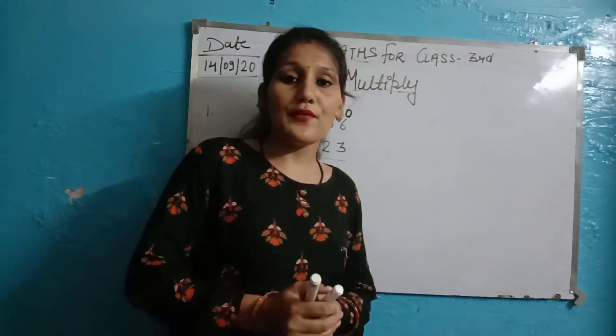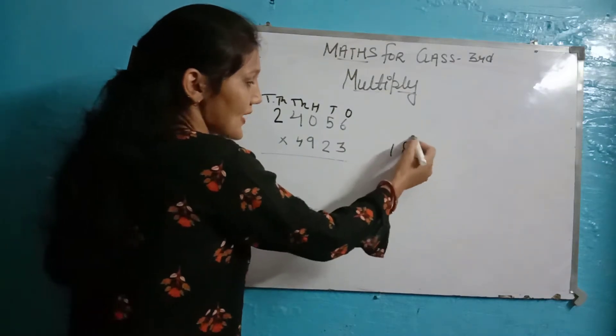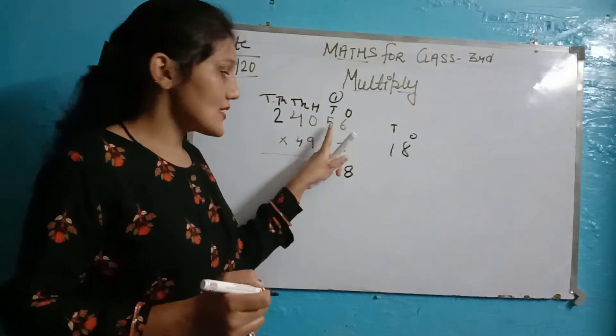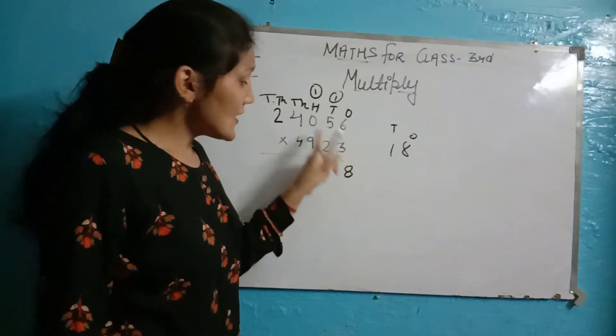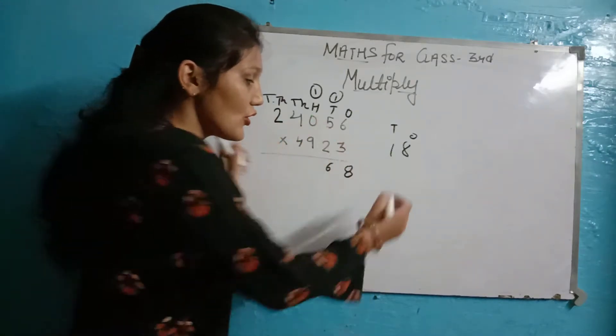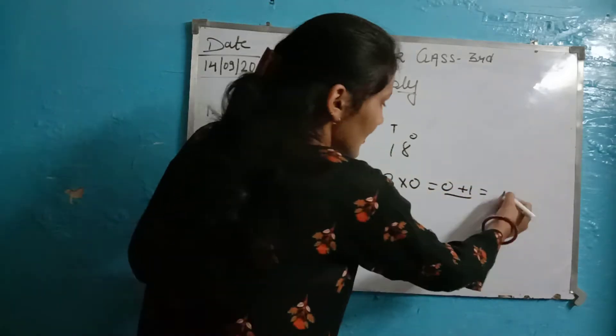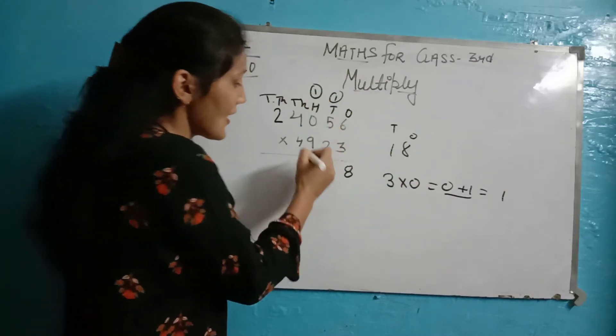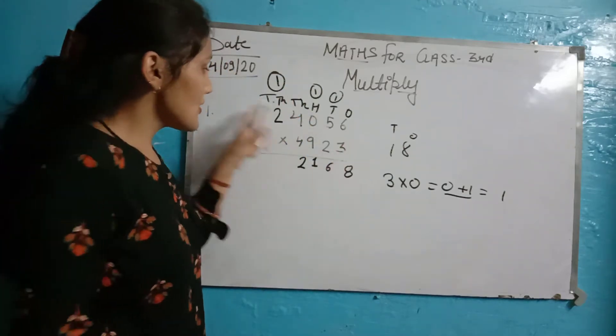So 3 times 6 equals 18. All the children will know. We will write 8 in the ones place and carry 1. Now this number is in tens place. 3 times 5 equals 15, plus 1 is 16. And then 3 times 0. If any number is multiplied by 0, as I have explained in place value, the answer is 0. If we do 0 plus 1, the answer is 1.